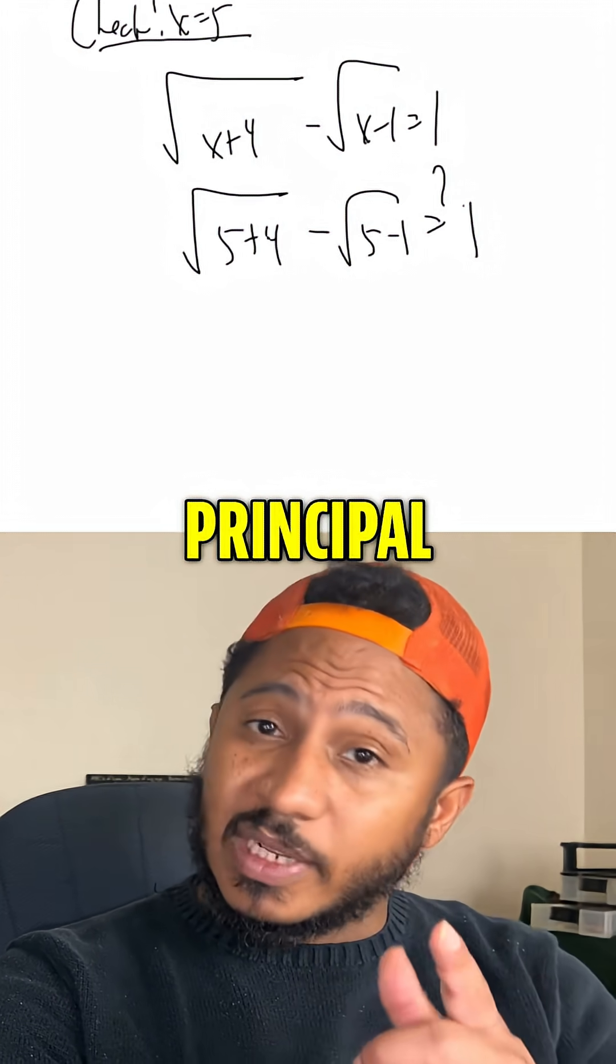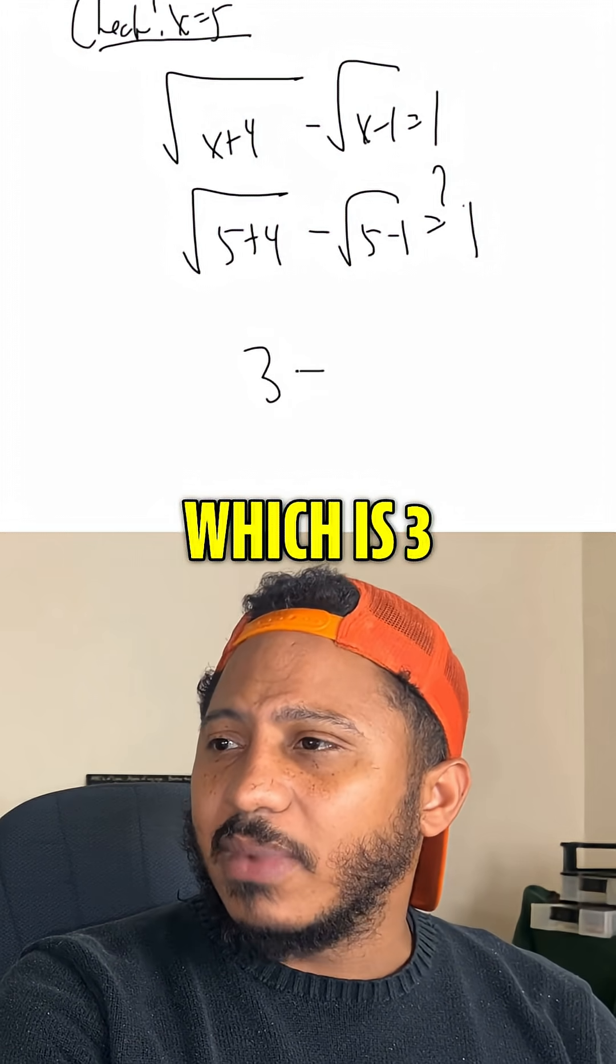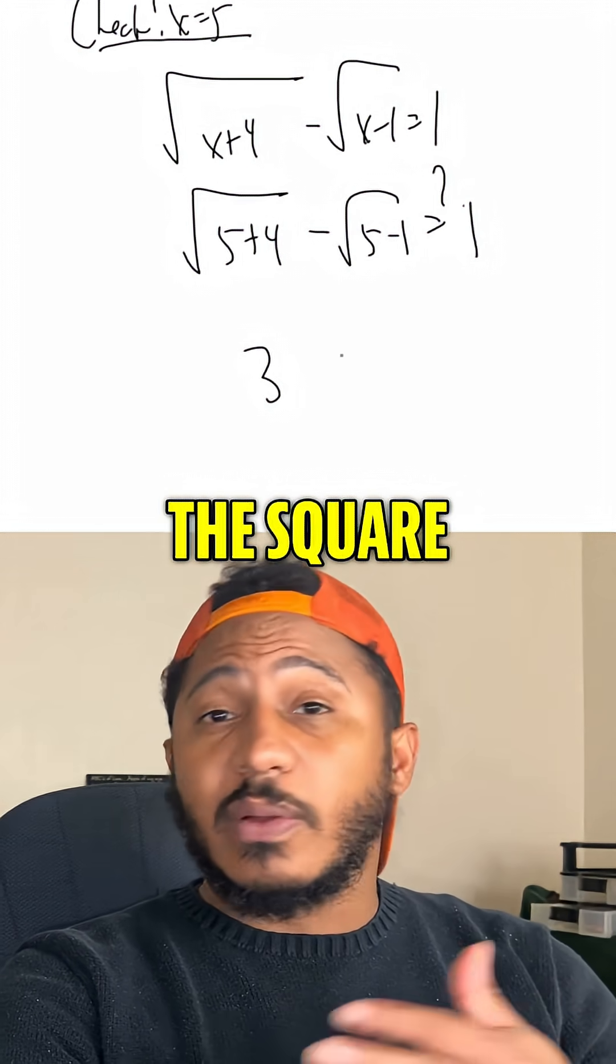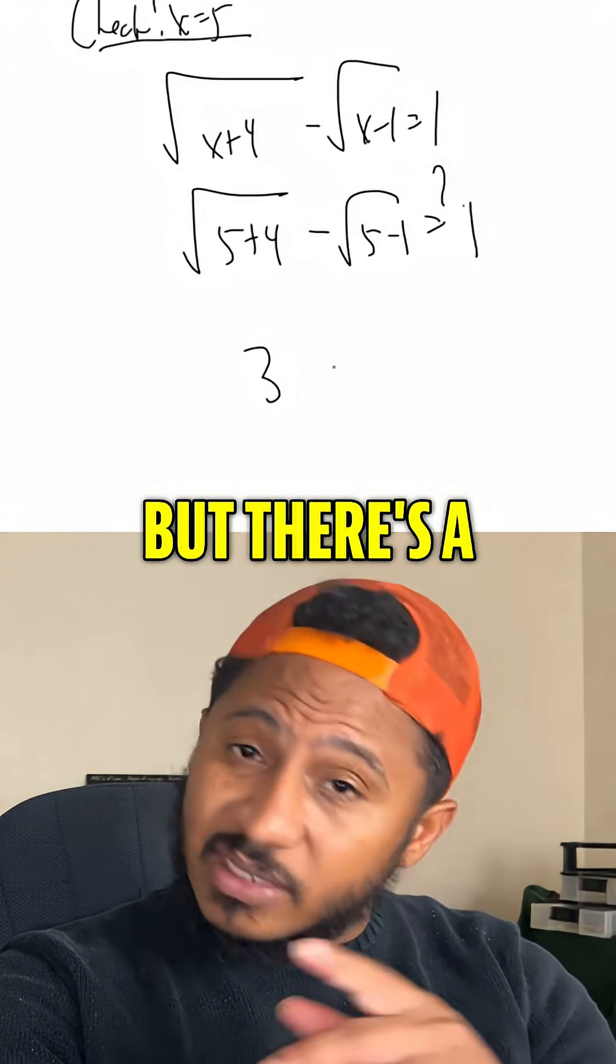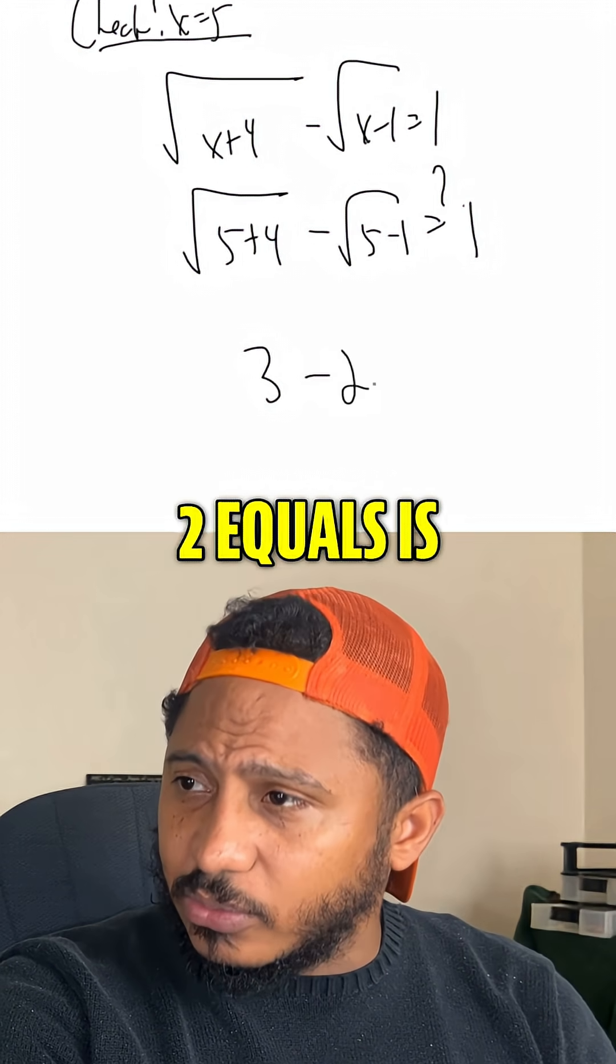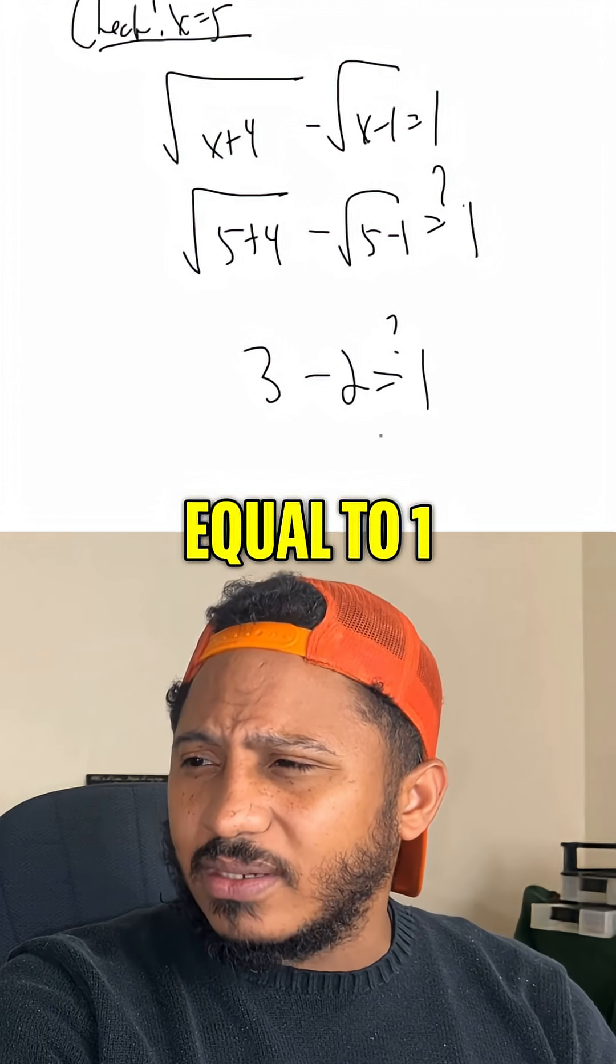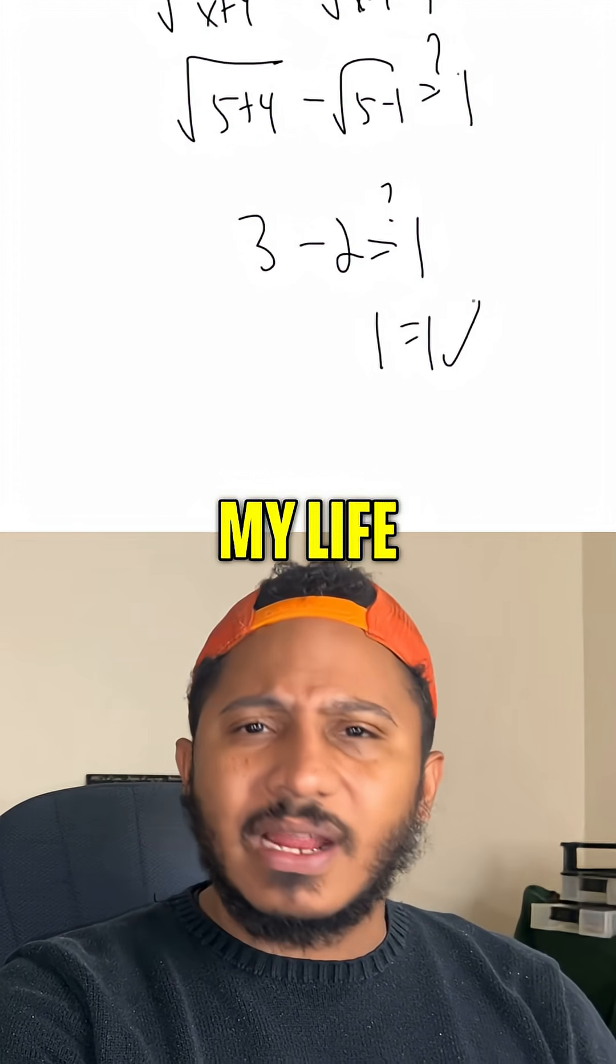5 plus 4 is 9, and the square root of 9 is the principal square root of 9, which is 3. Minus 5 minus 1 is 4. The square root of 4 is 2, the principal square root, but there's a minus in front, so we get minus 2. Is that equal to 1? Yeah, 1 equals 1. That's been true all my life.